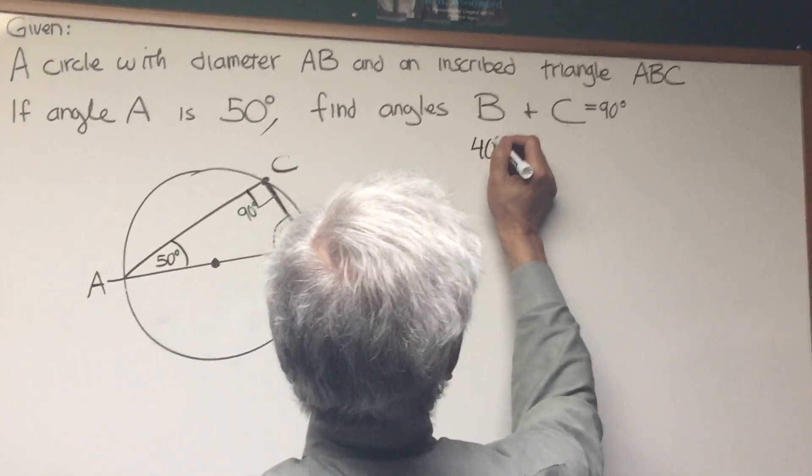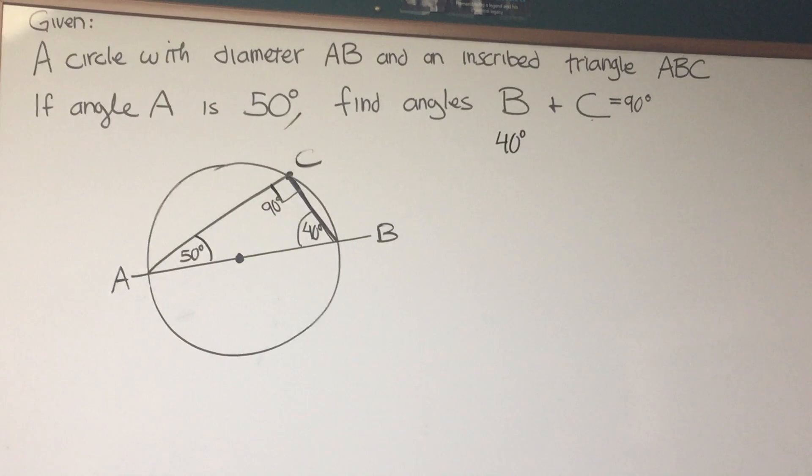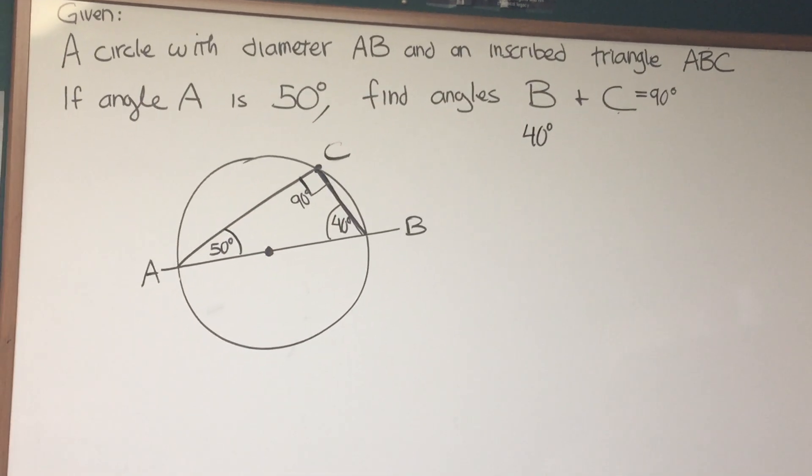So angle B is 40 degrees, angle C, the inscribed angle, that's 90 degrees. And there we are.